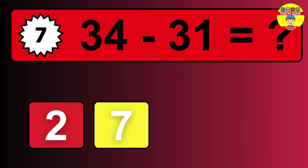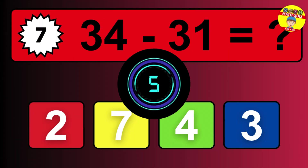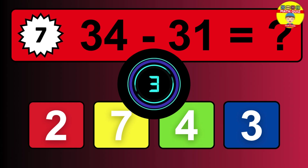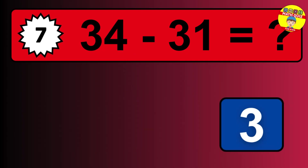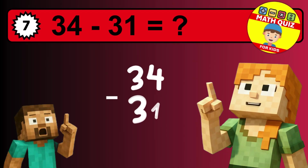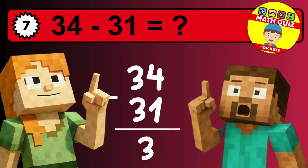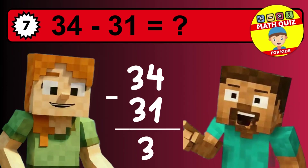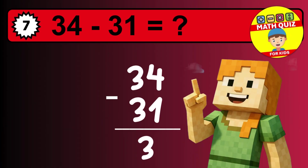What is 34 minus 31? Time to think. Let's solve this step by step. We start with the units: 4 minus 1 is 3. Then we go to the tens: 3 minus 3 is 0. The final answer is 3.